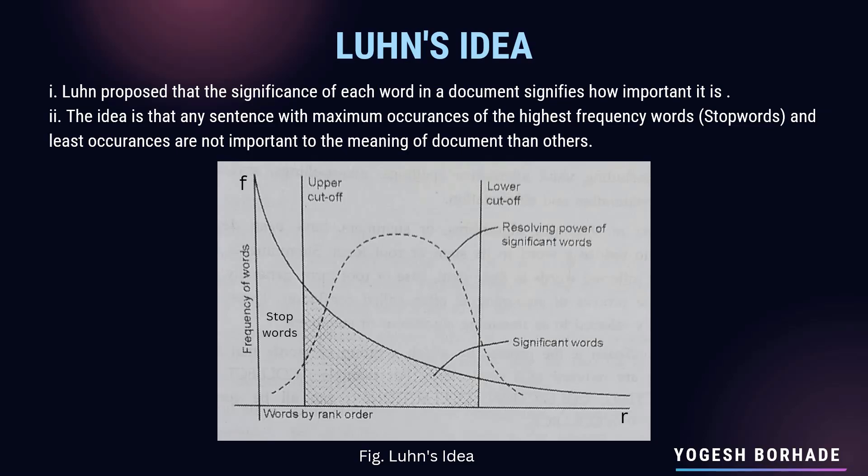Loon's idea states that sentences with maximum occurrences of the highest frequency words — also referred to as stop words or common words — and sentences with least occurrences of words are not important to the meaning of a document. The maximum occurrences of commonly used words and the least occurrences of words do not play an important role during searching or retrieval of information.